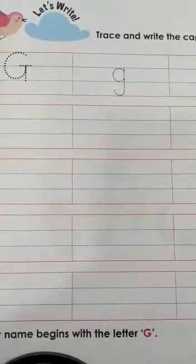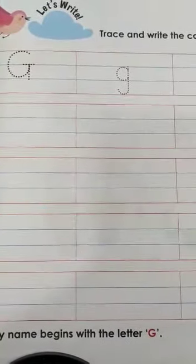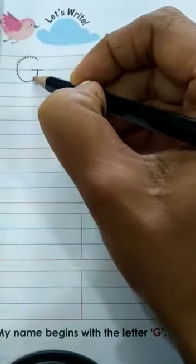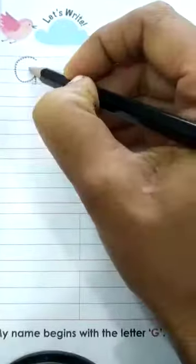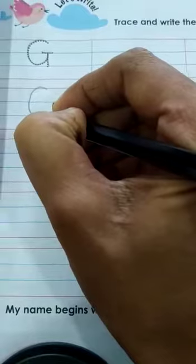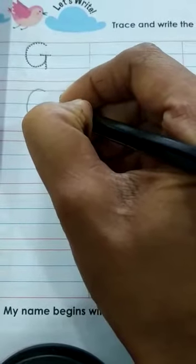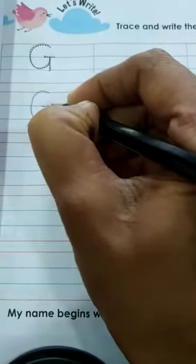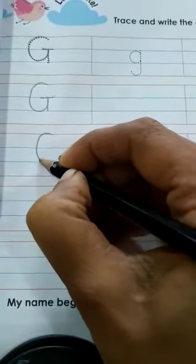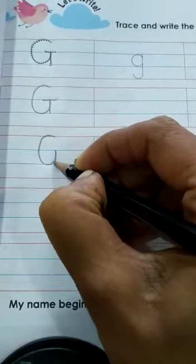On this page you will trace and write capital and small letter G. This is capital G — trace on the dots first, like that. Next you have to write yourself: a curve like this, go up, then a standing line and a sleeping line. This is how you write G.